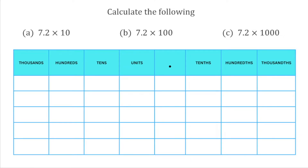For today's video we're going to take a look at multiplying by 10, 100 or 1000. When we've got questions like these we can actually use a place value diagram to help us out. When we multiply by 10, 100 or 1000, we're actually moving the digits in our number to the left of the decimal point. The amount of times we move the digits is shown by the number of zeros in the number that we're multiplying by.